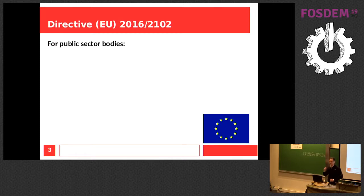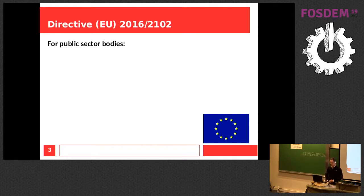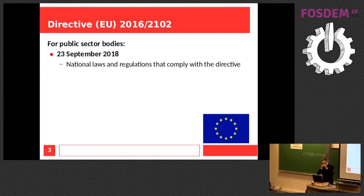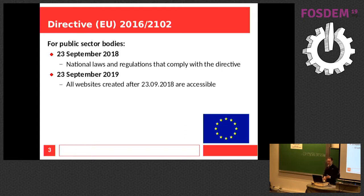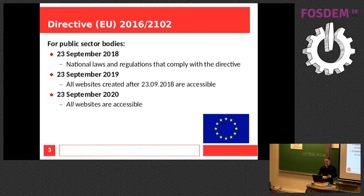A bit about this directive: as I said, it only applies to public sector bodies — city councils, national governments, their websites, and in some countries also publicly funded universities. This is already basically valid now because since 23 September 2018, each EU member state was supposed to have national laws and regulations that comply with the directive. And in 23 September this year, all websites created since September last year will need to be accessible. Then almost two years from now, all websites — also the older ones from public sector bodies — will need to be accessible.